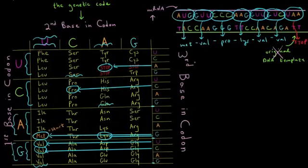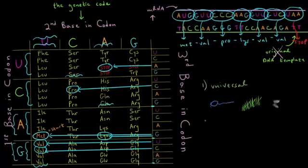There are a couple of important things that you should keep in mind about the genetic code. The first is that it's universal. What I mean by that is that all organisms, all the way from bacteria to plants to animals, all use the same genetic code to code for their amino acids and polypeptide chains.